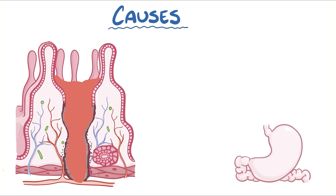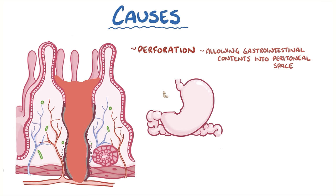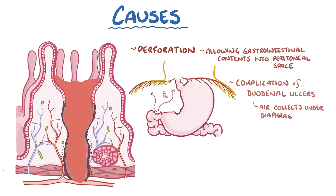Another complication is perforation, which is when an ulcer erodes all the way through the wall of the stomach or duodenum, allowing gastrointestinal contents like undigested food and gastric secretions to get into the peritoneal space, which is usually sterile. Perforation is a well-known complication of duodenal ulcers on the anterior wall of the duodenum. When they perforate, air starts to collect under the diaphragm, irritating the phrenic nerve and sending referred pain up to the shoulder.